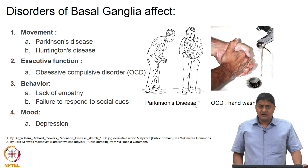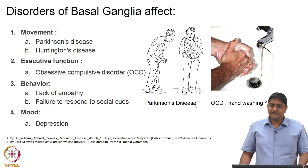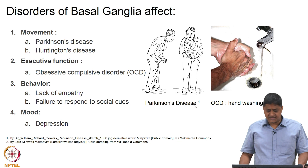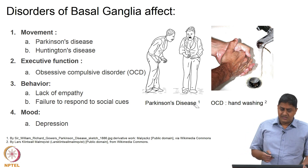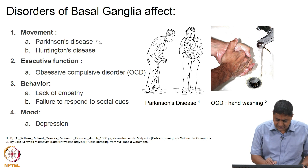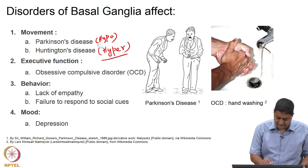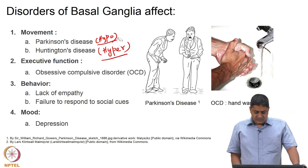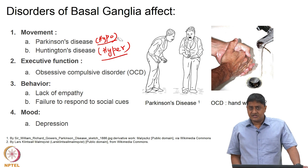There are different disorders that affect different loops, which means different functions are affected. If it affects the movement loop, different diseases can happen. Parkinson's disease is a hypokinetic disorder and Huntington's disease is a hyperkinetic disorder. Essentially, Parkinson's disease is a disease caused due to the degeneration of the nigrostriatal pathway.